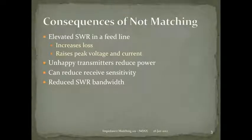Elevated SWR raises peak voltage and current not just at the transmitter but throughout the line. With very high SWR and full power, that peak voltage keeps rising, and you can arc over a small feed line. Unhappy transmitters will dial back power. High SWR can also reduce receive sensitivity if there's a significant mismatch between your receiver input impedance and the feed line or antenna.